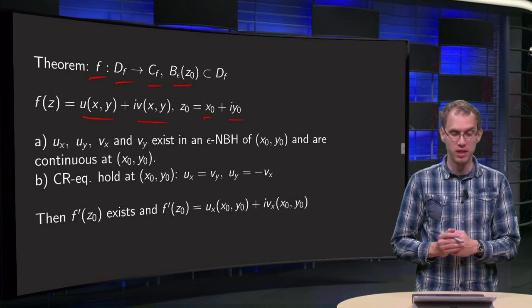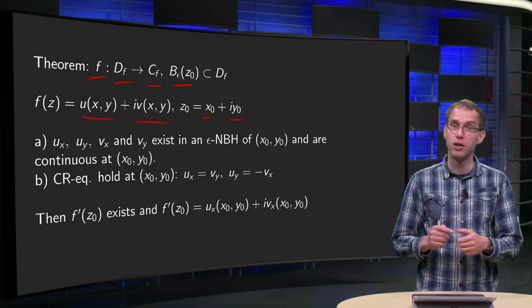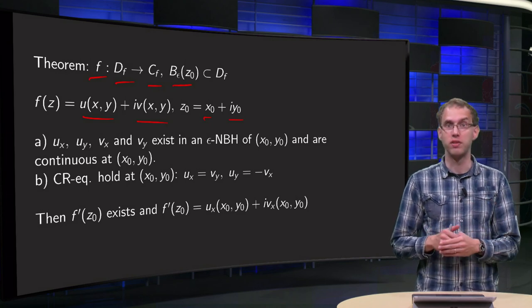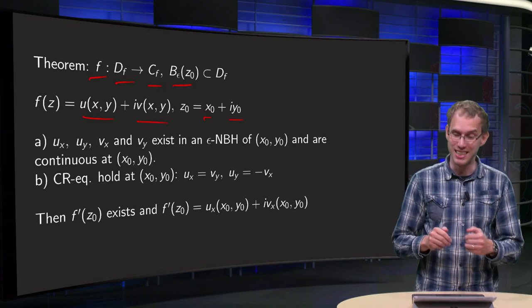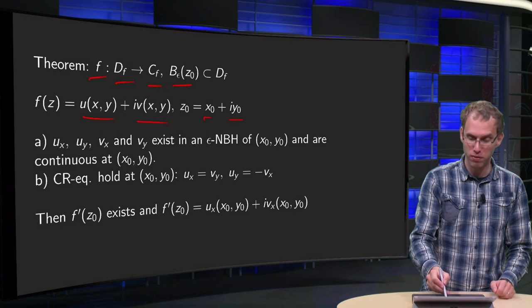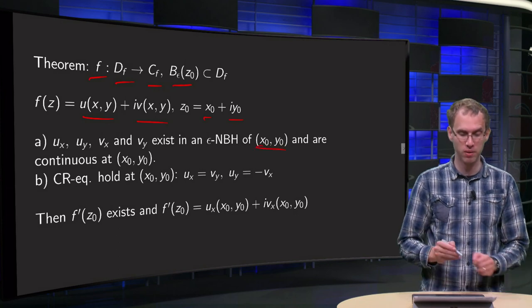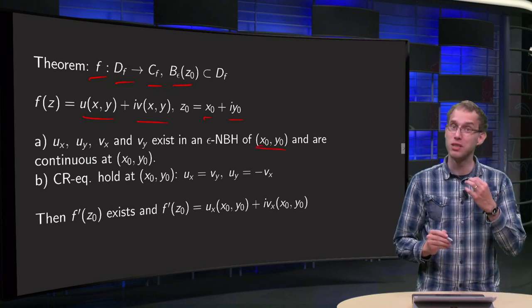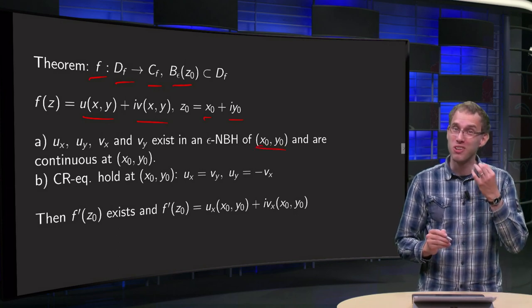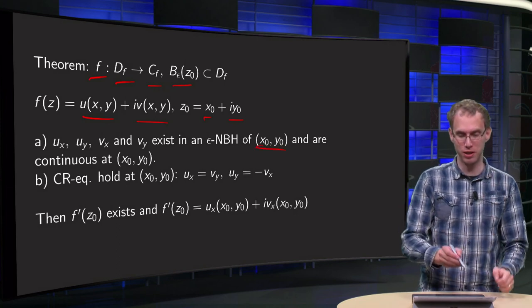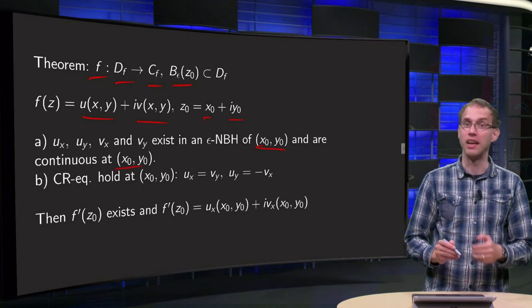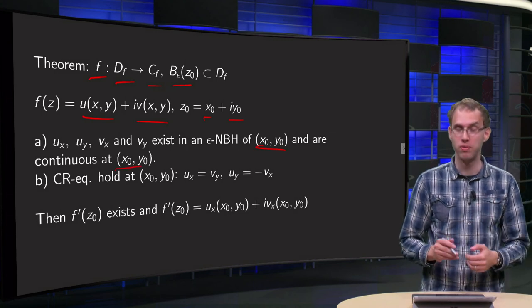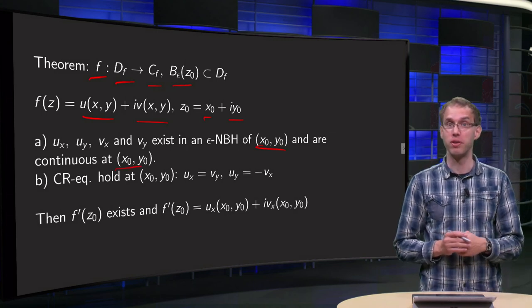Now what do we need? All partial derivatives ux, etc., need to exist in this neighborhood of x0, y0, and they need to furthermore be continuous at this point. And the second condition: we need Cauchy-Riemann.